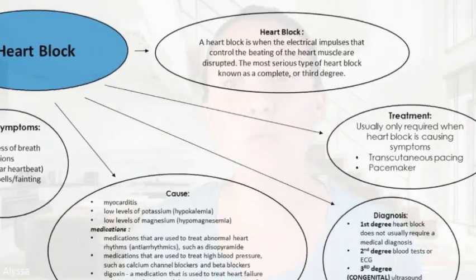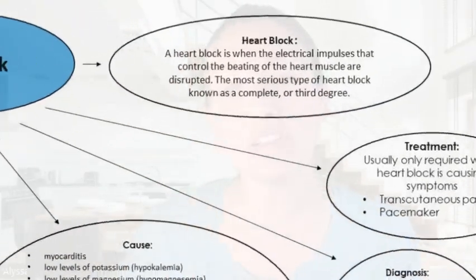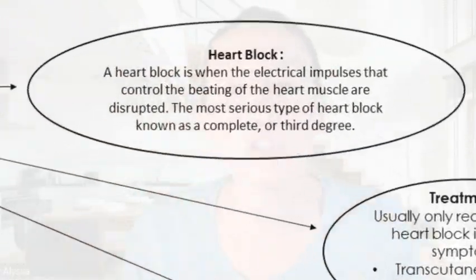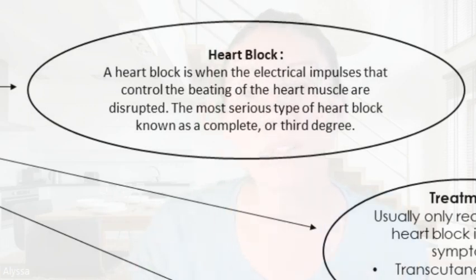So heart block — what is it? Heart block is when the electrical impulse that controls the beating of the heart muscles is disrupted. The most serious type of heart block is known as complete or third degree.